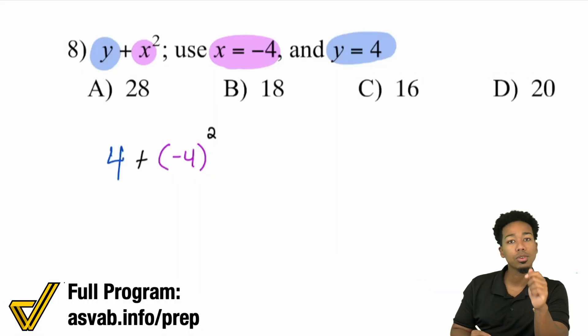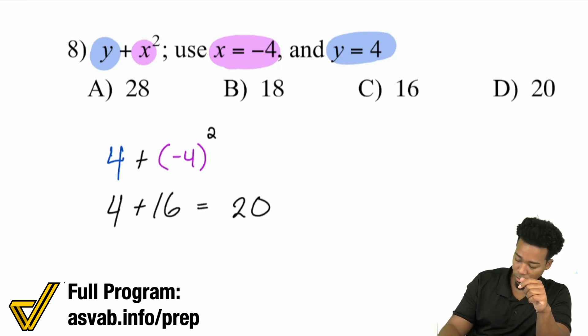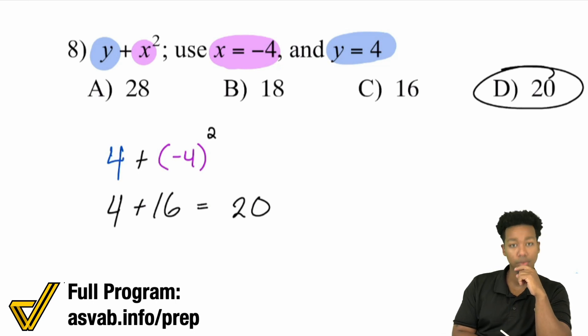-4 times -4 is a positive 16. And so you have 4 + 16, which becomes 20. And that's D right there.